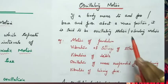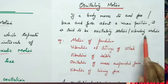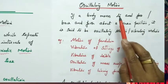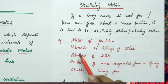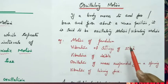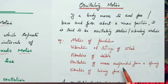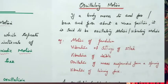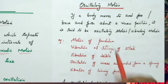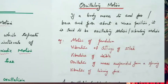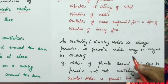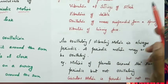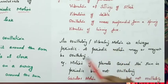Now we can see what is oscillatory motion. If an object moves to and fro, or back and forth, about a mean position, it is said to be in oscillatory motion or vibratory motion. Examples include motion of a simple pendulum, vibration of strings of a sitar or musical instruments like guitar, vibration of tabla, oscillation of a mass suspended from a spring, and vibration of a tuning fork. All oscillatory or vibratory motion is always periodic, because it repeats after regular intervals of time.